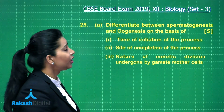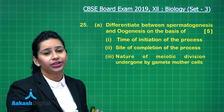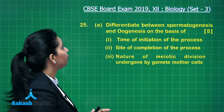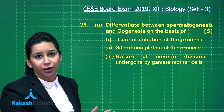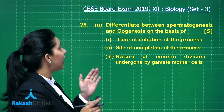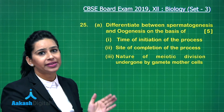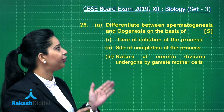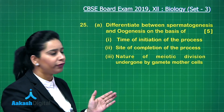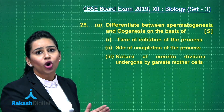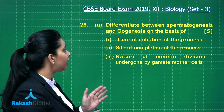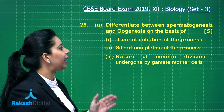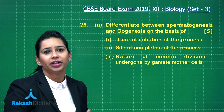Here is the next question and this question has been asked in two parts. Let us see the first part: differentiate between spermatogenesis and oogenesis on the basis of three criteria — first, time of initiation of the process; second, site of completion of the process; third, nature of meiotic division undergone by gamete mother cells.